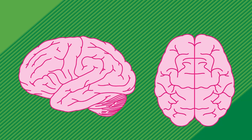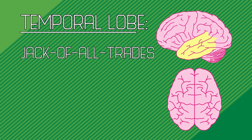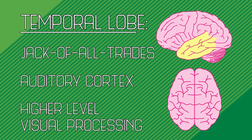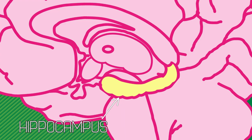Below the parietal lobe, we find the temporal lobe — sort of a jack-of-all-trades. This lobe contains the primary auditory cortex, important for our ability to hear and process speech and language. The temporal lobe also allows us to do some higher-level visual processing, like recognizing faces and objects. Inside the temporal lobe, we find the hippocampus, a structure that is crucial in the formation and maintenance of new memories.